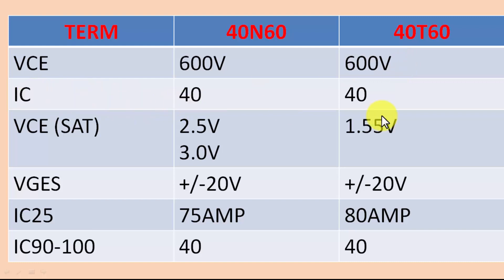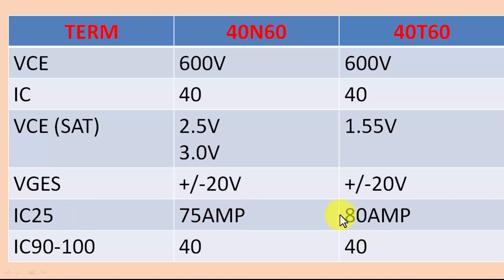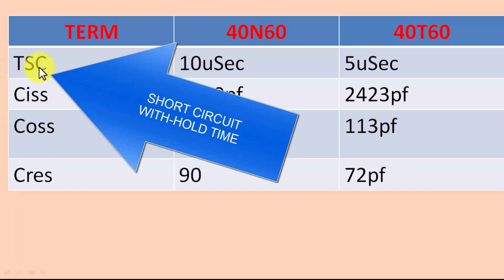Looking at the specifications: collector voltage is 600V in both, collector current is 40 ampere continuous in both. VCE saturation is 2.5V for the 40N60 and only 1.55V for the 40T60. Gate-to-emitter voltage is ±20V in both. At 25°C the peak current is 75–80 ampere, and at 90–100°C with full power dissipation it is 40 ampere. So current ratings are essentially the same.